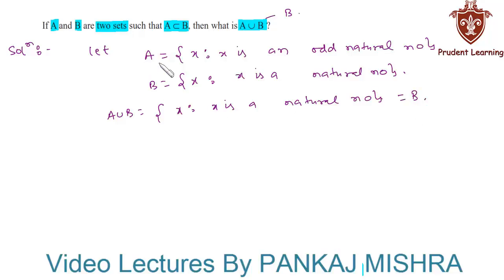Hence we can say that if A and B are two sets such that A is subset of B, then A union B is set B itself. So this completes our solution.